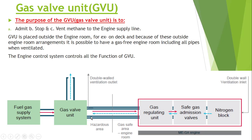A question may be asked: in a gas admission engine, what are the two components placed outside the engine room? The two components placed outside the engine room are the fuel gas supply system and the Gas Valve Unit. These two systems can be placed on deck, and because they are placed on deck they are well ventilated. This also eliminates the cost of double wall piping requirement, making it cost-effective.